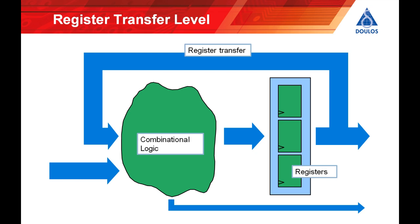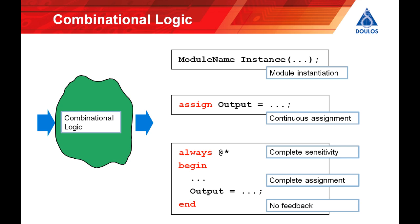There are three ways to describe combinational logic in SystemVerilog just as there are in Verilog or VHDL. It can be described using module instantiation always assuming the modules you instantiate are themselves combinational of course. It can be described using continuous assignments remembering as we said earlier that the left hand side of a continuous assignment can be a variable instead of a wire in SystemVerilog. Continuous assignments are implicitly combinational because the entire left hand side of the assignment gets re-evaluated whenever there's any change to a value on the right hand side.